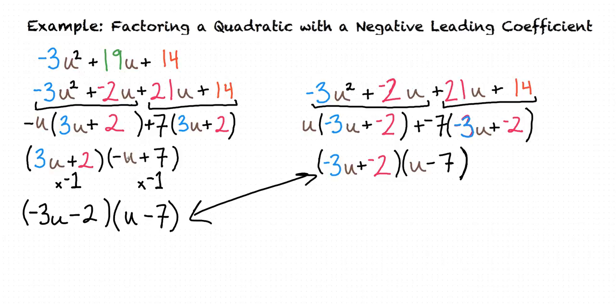So, really, to get from this to this, we just had to multiply by -1 two times, which is the same as multiplying by positive 1, and so these two answers are equivalent.